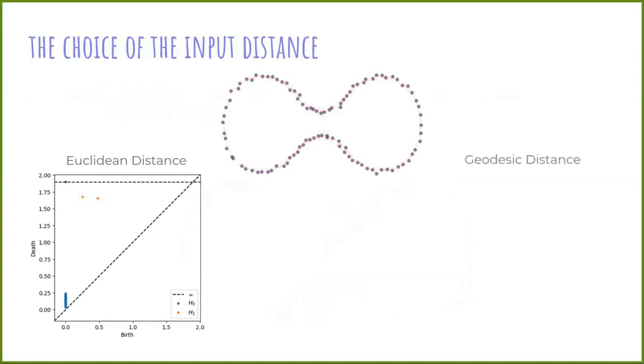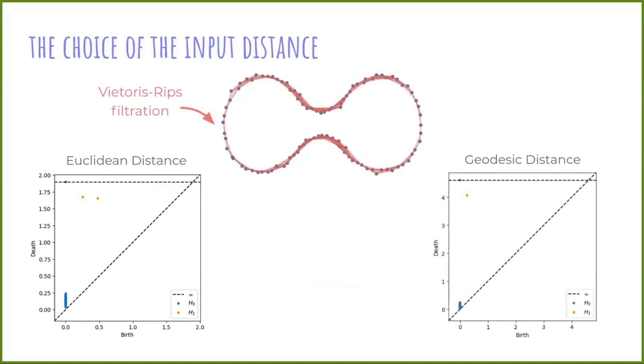Now, imagine for one moment that you are able to compute the geodesic distance between the points in your sample. In that case, the filtration will respect the intrinsic geometry, and the persistence diagram will reflect more faithfully the topology of the space. This is the kind of diagram that we call intrinsic persistence diagram.